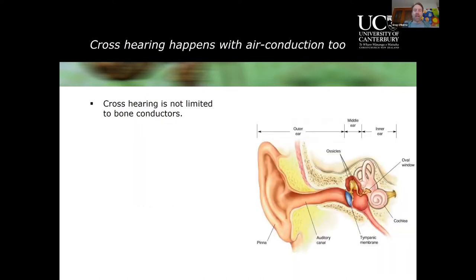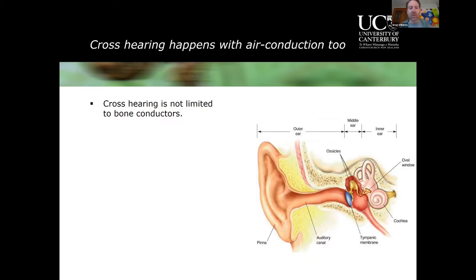Cross hearing isn't limited to bone conduction — it actually happens with air conduction too. With supra-aural headphones, the transducer spreads vibration over a large area of the head. That vibration passes through cartilage and soft tissues and enters the skull, almost as though you have a bit of a bone conductor on there. Additionally, it's not always a perfect fit, so sound leaks out around the cushion of the transducer.